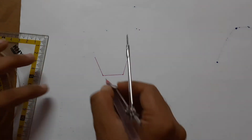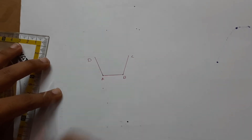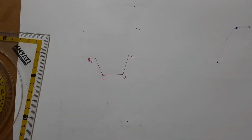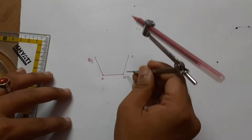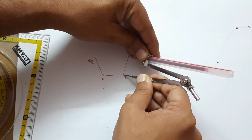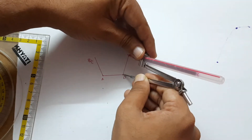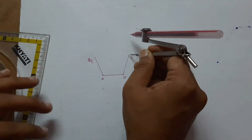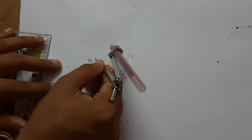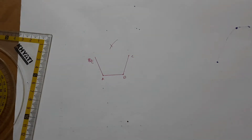So now this is A, B, C, D. This length is 25 mm. With C as center, draw an arc. With E as center, cut that arc — then you will get point D.